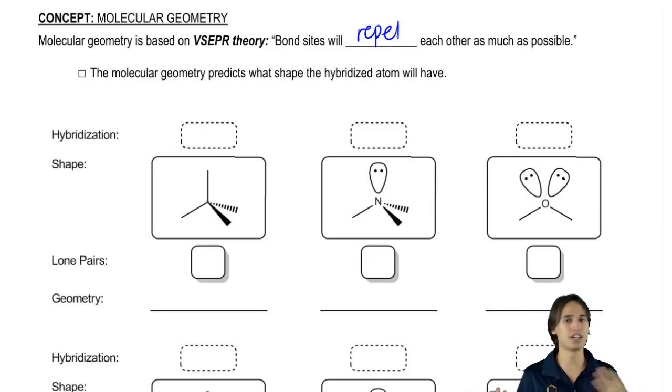So sp2, sp3, whatever. When I talk about geometry, what I'm going to be talking about is the actual shape of the molecule. What does it look like if I were to put it under a microscope? What kind of shape would it have?